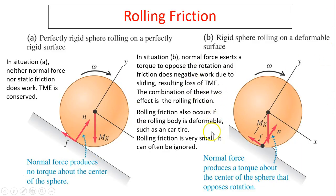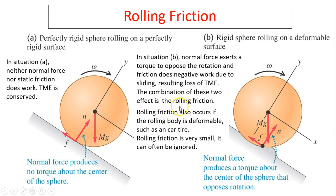Rolling friction: There are two diagrams. On the left, a perfectly rigid sphere rolling on a perfectly rigid surface — in this situation neither normal force nor static friction does work, so total mechanical energy is conserved. However, not all surfaces are perfect. When there is a small deformation on the surface, the normal force produces a torque about the center of the sphere that opposes rotation. Additionally, there may be sliding friction. In this case, normal force exerts a torque opposing rotation and friction does negative work due to sliding, resulting in a loss of total mechanical energy. This combination is called rolling friction. Rolling friction also occurs if the rolling body itself is deformable, such as a car tire. Rolling friction is very small and can often be ignored, as was done in the previous examples.